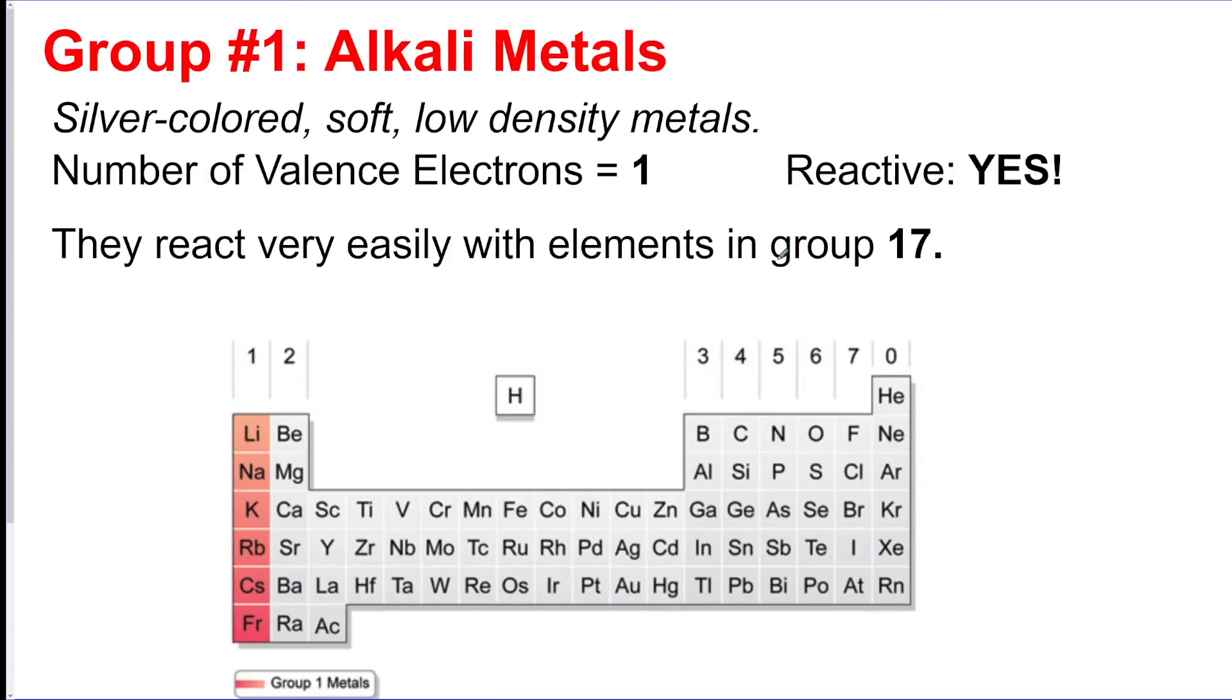So if you want to get to eight total, group one would want to react with group 17 because group one has one valence electron and group 17 has seven. So if you have one plus seven, that's going to give them eight. So group one reacts really well with 17, which means group two is going to react really well with group 16.